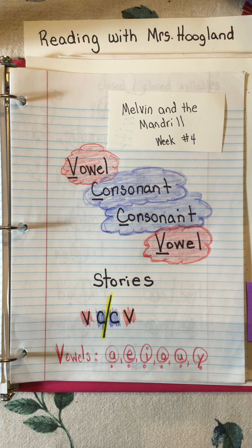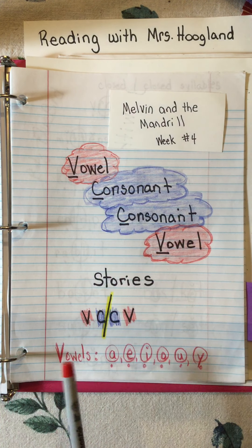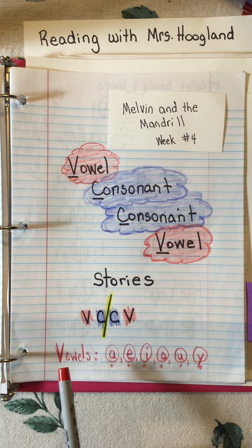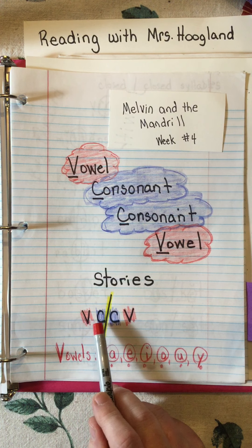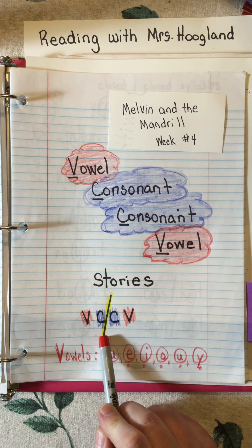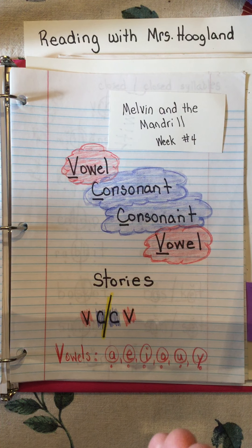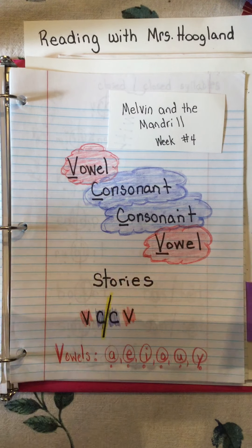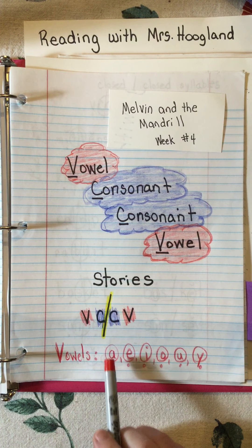All right friends, here we go - another lesson with Reading with Miss Hoagland. This is going to be a vowel-consonant-consonant-vowel story. We are looking for this pattern: vowel, consonant, consonant, vowel. When we see those two consonants in the middle, we get our hot karate chopper out and chop it apart.